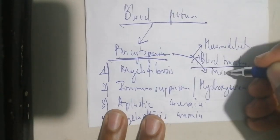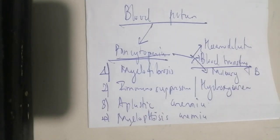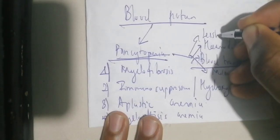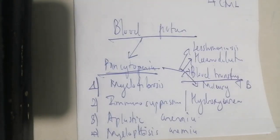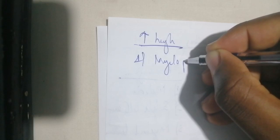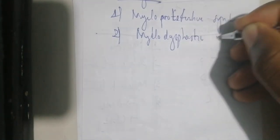Infections can also be associated with pancytopenia — particularly miliary tuberculosis, which affects the bone marrow. Leishmaniasis is another infection associated with pancytopenia. When the whole blood picture is instead elevated — red cells, white cells, and thrombocytes all high — you think of myeloproliferative syndromes.